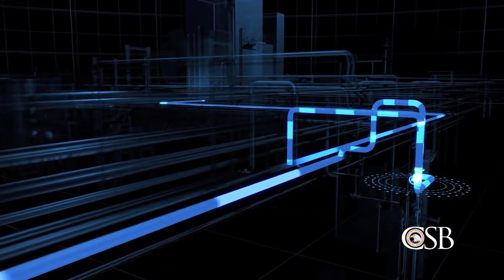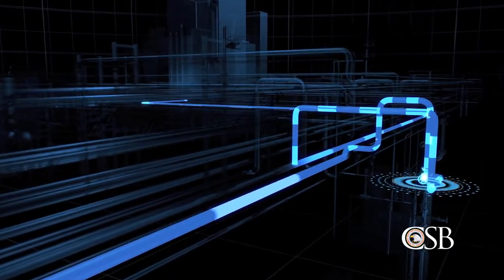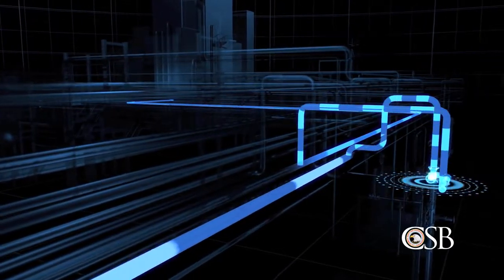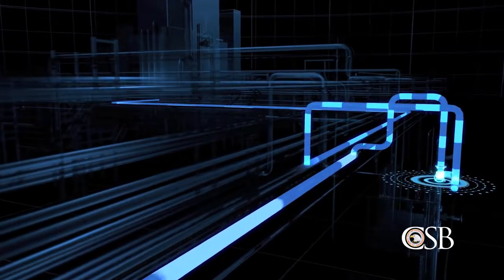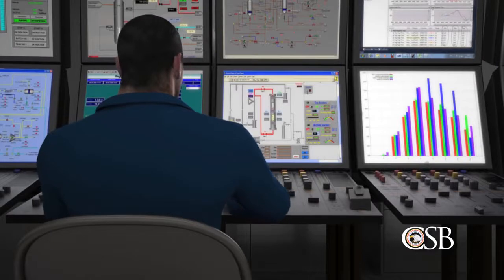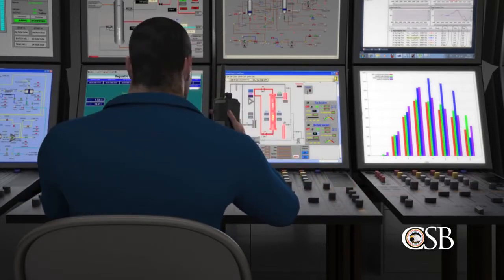The vent system connects the methyl mercaptan storage tank with process equipment inside the lanate manufacturing building. As liquid flowed into the vent header, pressure began to build within that system. However, high pressure events within the vent system were not unusual due to flawed equipment design that allowed liquid to accumulate at low points in the system. These events occurred so frequently that DuPont instructed operators to drain liquid from the vent system daily.